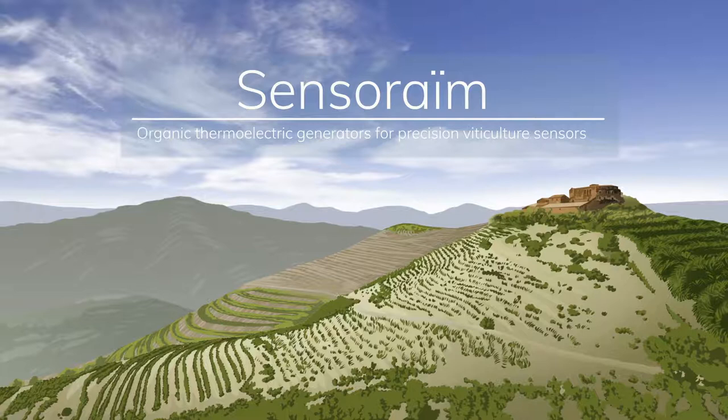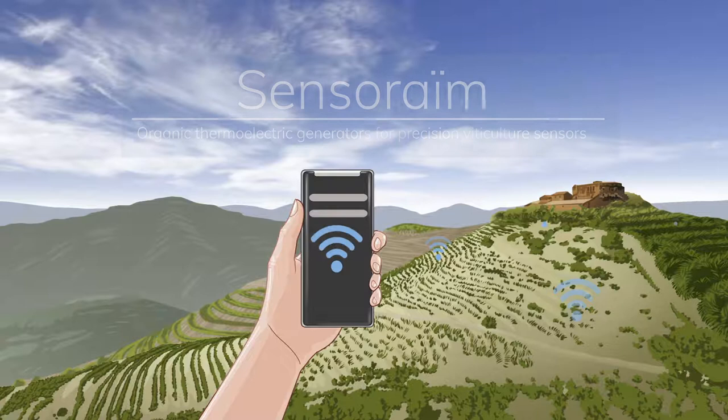Sensordine is a project framed within the field of precision agriculture. Its objective is to develop a distributed network of sensors that is powered by renewable energy.